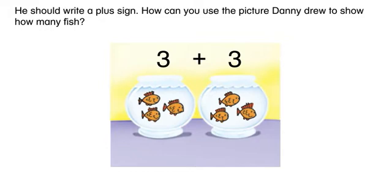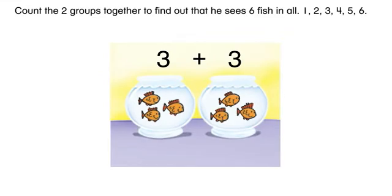How can you use the picture Danny drew to show how many fish? Count the two groups together to find out that he sees six fish in all. One, two, three, four, five, six.